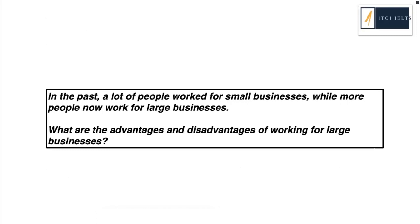Let's get rid of all the extra stuff and now we can focus on the important question. When we analyze this question, it's really important to notice what question type it is. You can see underlined here it says 'what are the advantages and disadvantages' — it's really important that we notice that this is plural. This means in your exam you have to give two advantages and two disadvantages. If you only give one advantage or one disadvantage, you're not going to get over a band five for your task response. So it's really important to know what the question is asking so we can follow the correct structure and generate the correct amount of ideas.